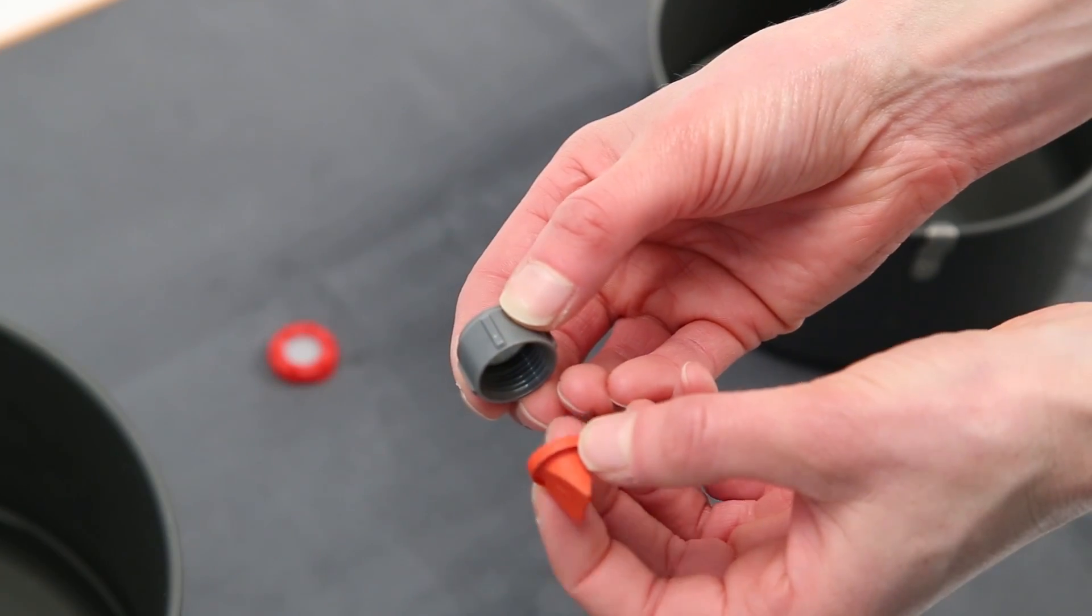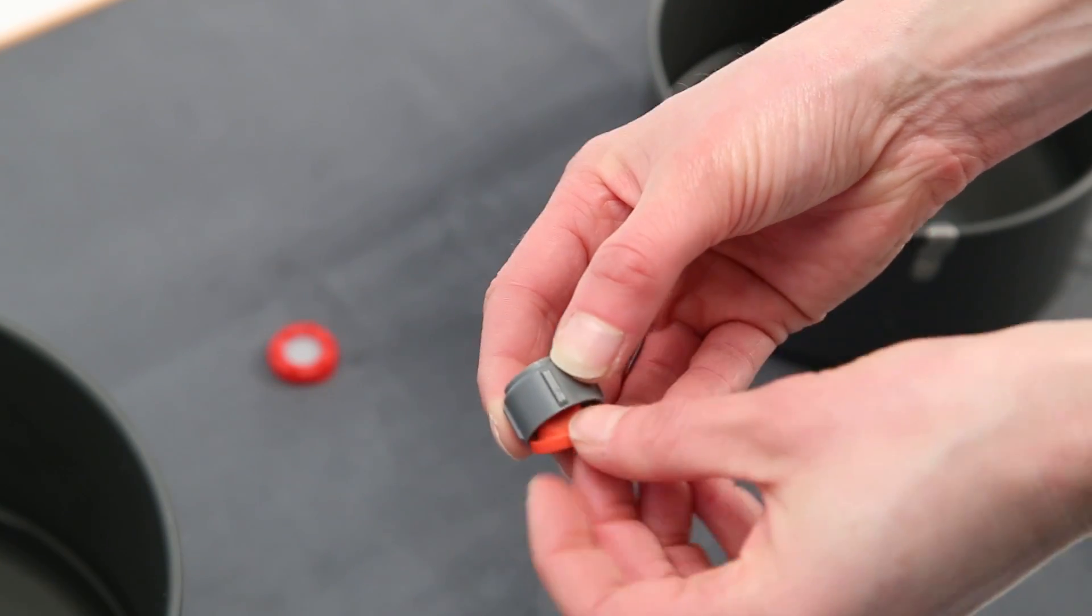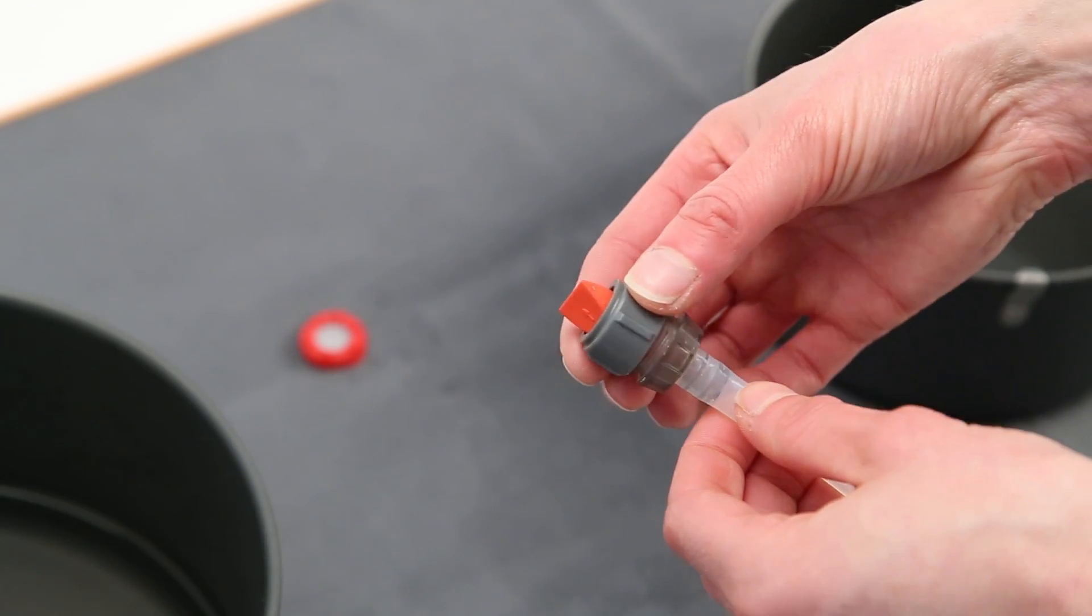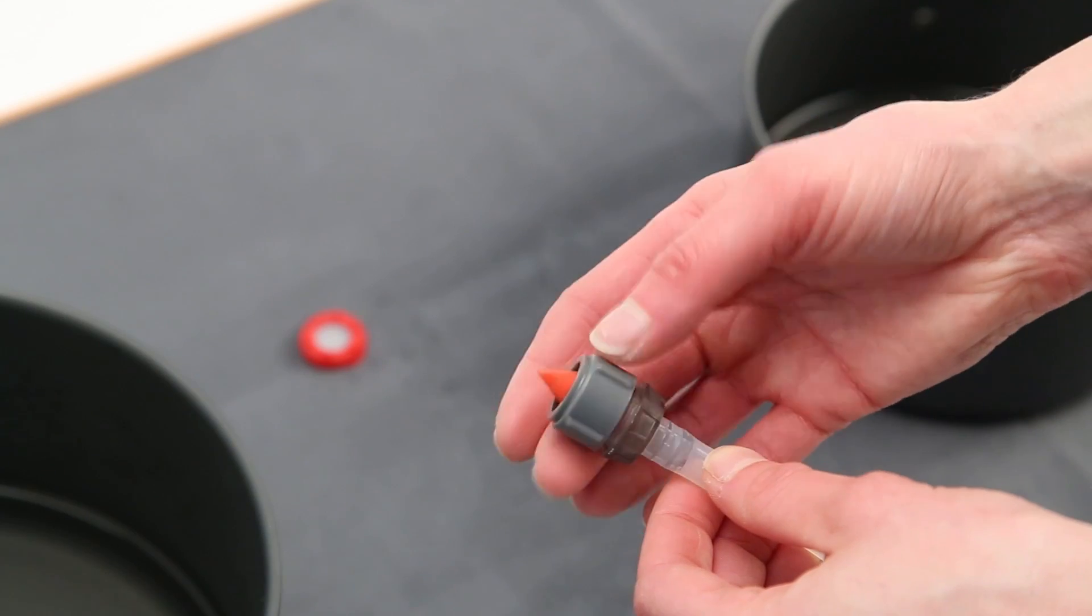Remove the check valve and reverse its direction. Place it back into the female check valve housing. Screw the female check valve housing back onto the male check valve housing.